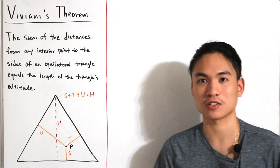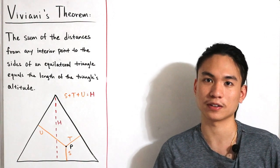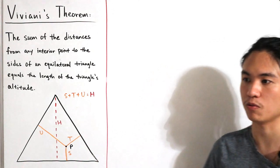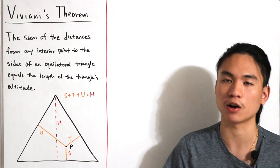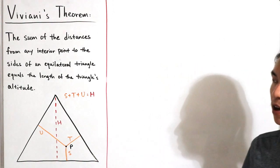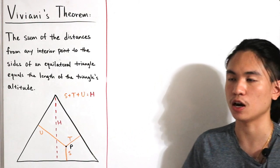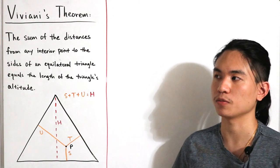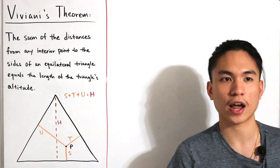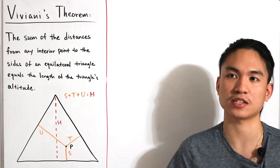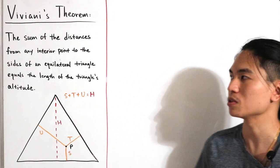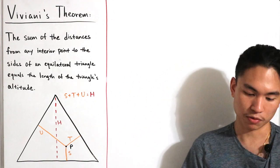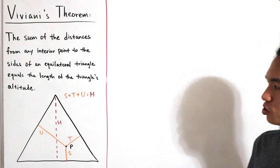There are actually two ways to prove this. One is a visual proof — you don't really need words for it — which I'll cover first. The second proof uses the proposition that a triangle's area equals one-half times the base times the height.